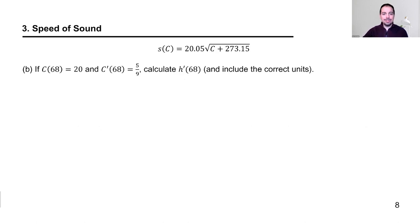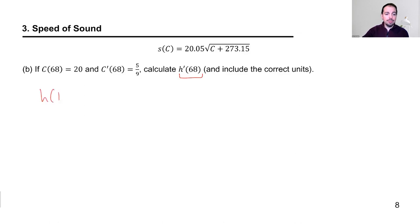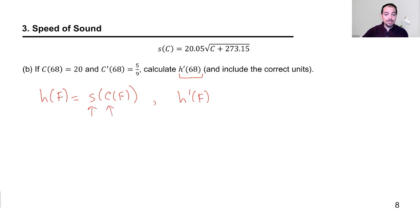Suppose C of 68 is 20, and C prime of 68 is 5/9. Calculate H prime of 68 and include the correct units. Remember H of F equals S of C of F, so to take the derivative, we apply the chain rule. The outside function is S, the inside is C, and the independent variable is F.